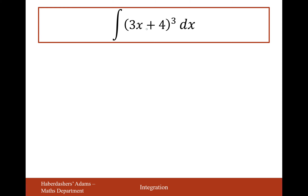So we're integrating brackets (3x + 4) all cubed. Let me show you how integration by substitution works. We're going to be looking inside the cubed bracket — the inside function — and replacing it with a different letter, u. So we're replacing 3x + 4 with u, turning it into the integral of u cubed dx. But we can't integrate u cubed with respect to x — we need to fix this.